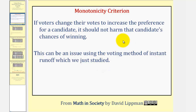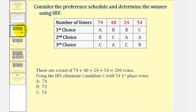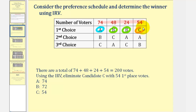Let's take a look at an example and begin by determining the winner of this election using instant runoff voting. If we sum this row here, we know there are a total of 200 votes, where candidate A has 74 first choice votes, candidate B has 48 plus 24, or 72 first choice votes, and candidate C has 54 first choice votes.